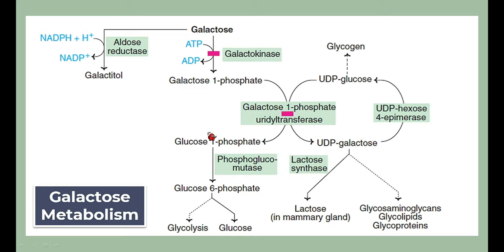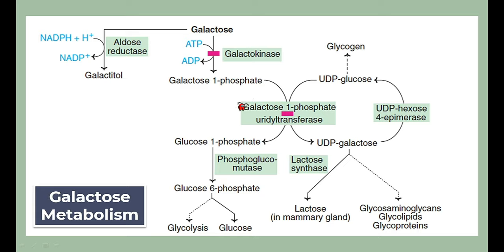The exchange forms UDP-galactose and glucose-1-phosphate. Glucose-1-phosphate undergoes normal glucose metabolism. UDP-galactose can form lactose in mammary glands, or it goes to the synthesis of GAGs (glycosaminoglycans), glycolipids, and glycoproteins. The two main enzymes in galactose metabolism are galactokinase and galactose-1-phosphate uridyl transferase. Deficiency of either leads to galactosemia — increased galactose in the blood.